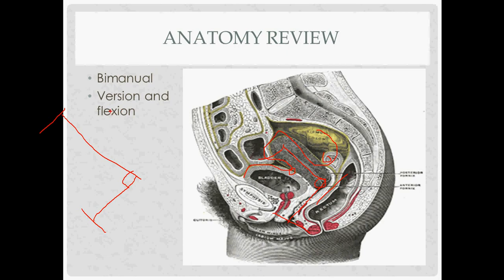Version refers to what you report after a bimanual exam about where the uterus is. You push up on the cervix and feel in the abdomen. If you push up and feel it, the uterus is anteverted. If you push up and don't feel anything, it's retroverted. Flexion refers to the angle of the uterus with respect to the cervix — if the uterus angles forward relative to the cervix, it is anteflexed. So you can be anteverted and anteflexed.